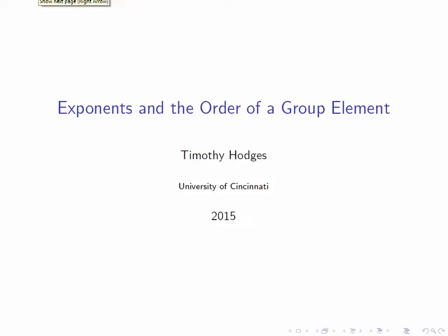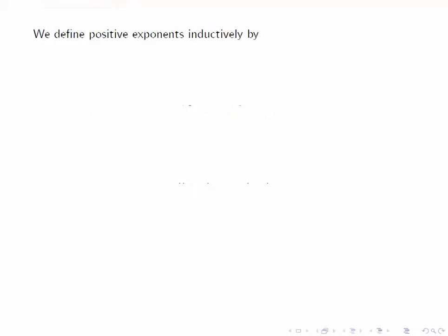Exponents in our group are defined in a very familiar fashion. For positive exponents, we define g to the n to be just the product of n copies of g. Inductively, this definition goes as g to the 0 equals e, and g to the n plus 1 is g to the n times g.